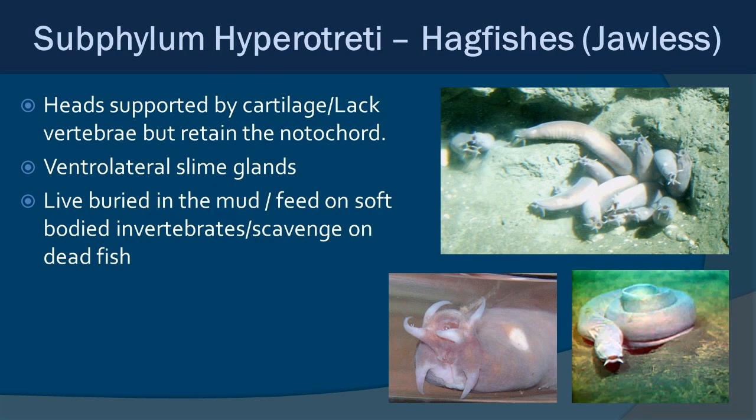The first group we'll look at is the hagfish — they're very interesting. They kind of look like eels. Their heads are supported by a cartilaginous frame. They don't really have vertebrae, but they do retain the notochord. They have ventrolateral slime glands and produce enormous amounts of slime. They generally live buried in mud and feed on soft-bodied invertebrates. However, if a large whale dies and the carcass gets to the bottom, hagfish will slither out and start devouring whatever they can — they are very big on scavenging.